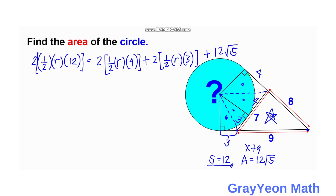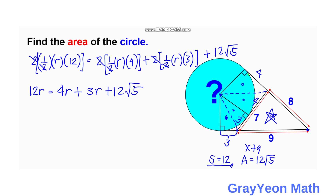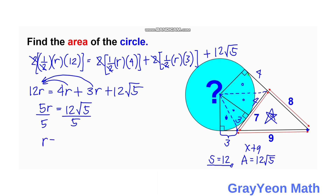To simplify the main equation, we have 12r equals 4r plus 3r plus 12 square root of 5. Combining terms on the right, 4r plus 3r equals 7r. Moving 7r to the left side, 12r minus 7r gives 5r equals 12 square root of 5. Dividing both sides by 5, r equals 12 square root of 5 over 5.